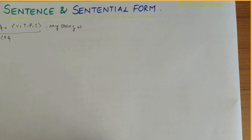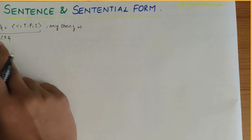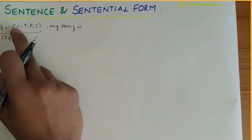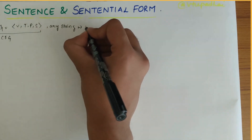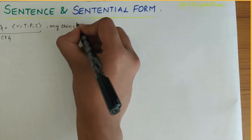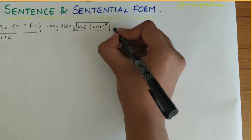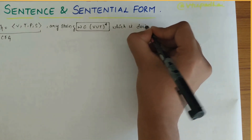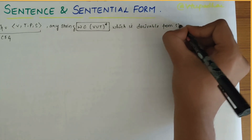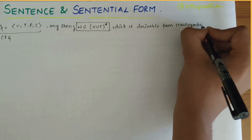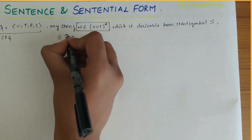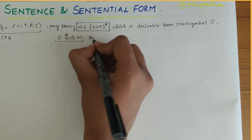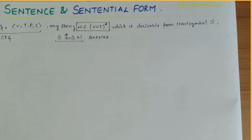In this video we'll be looking into the sentence and sentential form topic. Firstly, understanding the definition of sentence: let G be a context-free grammar represented as (V, T, P, S) — these are the four tuples. Let's take any string W belonging to (V union T)* which is derivable from the start symbol S. If S derives W, then W is called a sentence.